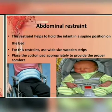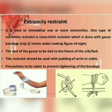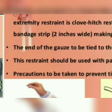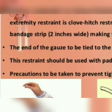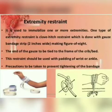Extremity restraints are used to immobilize one or more extremities — legs and hands. One type is the clove hitch restraint, used to immobilize the arm or leg. It is prepared from a piece of gauze, soft cloth, or crepe bandage. Precautions must be taken to prevent tightening of the bandage, and this restraint should be used with padding of the wrist or ankle.